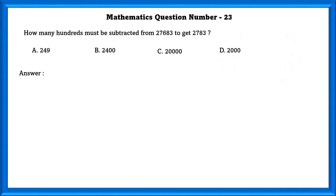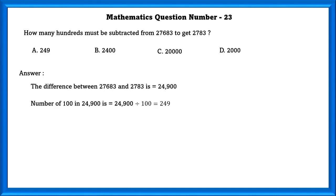Mathematics question number 23. How many hundreds must be subtracted from 27,683 to get 2783? The difference between the two numbers is 24,900. The number of hundreds in 24,900 is 249.